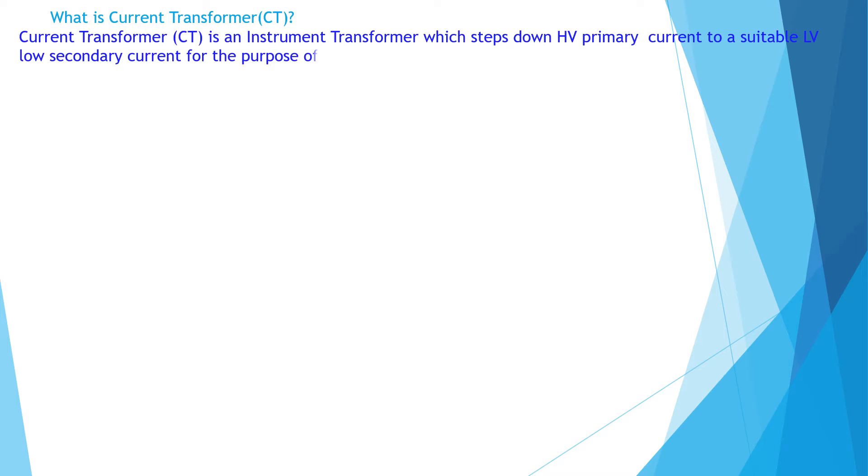What is current transformer? Current Transformer (CT) is an instrument transformer which steps down HV primary current to a suitable low secondary current for the purpose of measuring current.